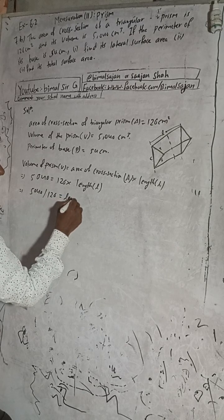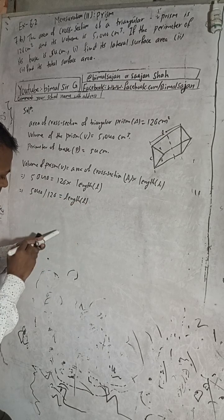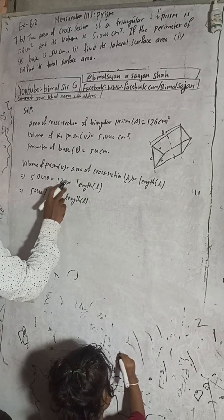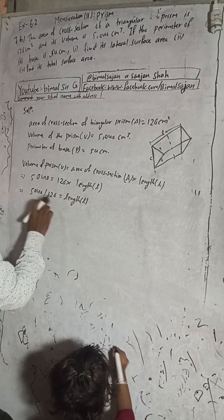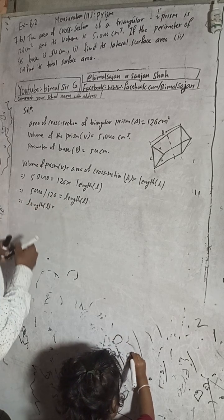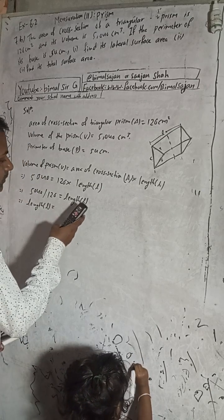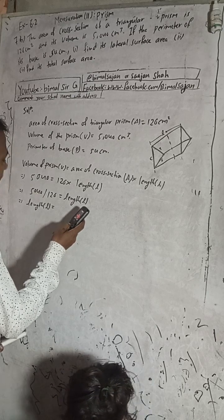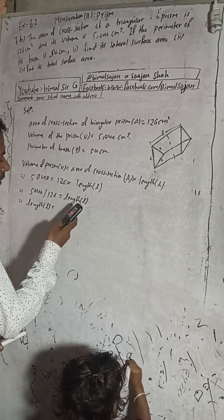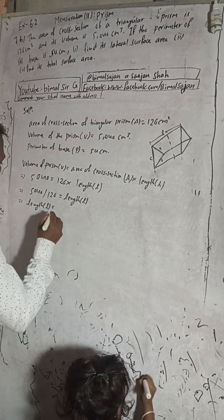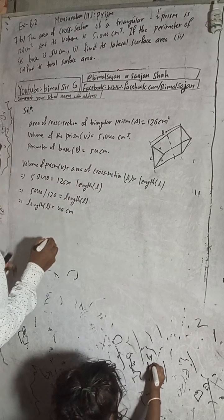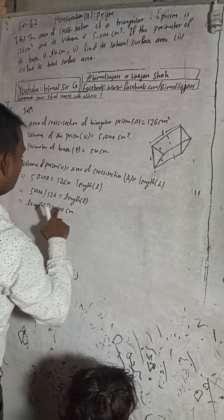So: 5040 divided by 126 equals length. When length is on the right-hand side multiplied, it goes to the left-hand side as division. L = 5040 ÷ 126 = 40. The unit is cm, so length equals 40 cm.